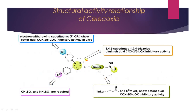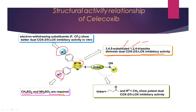Structure-activity relationship of celecoxib: electron-withdrawing substituents such as fluorine and trifluoromethyl confer dual COX-2 and lipoxygenase inhibitory activity in vitro. Substitution with a 1,2,4-triazole diminishes dual COX-2 and lipoxygenase inhibitory activity. The R2 substituent — CH3SO2 or NH2SO2 (sulfonamide) — is essential for biological activity.